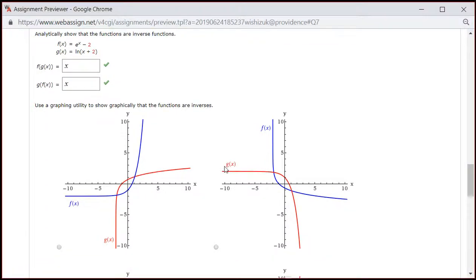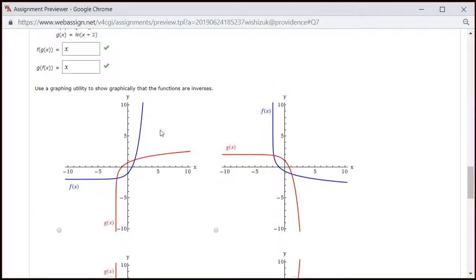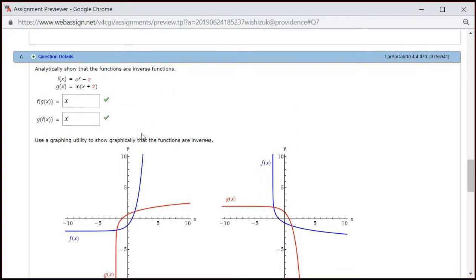And the graphs, right? So let's look at the f of x, e to the x minus 2. All right, so it's going to go through, so original e to the x go through positive 1. And by subtracting it, it's going to go through negative 1.